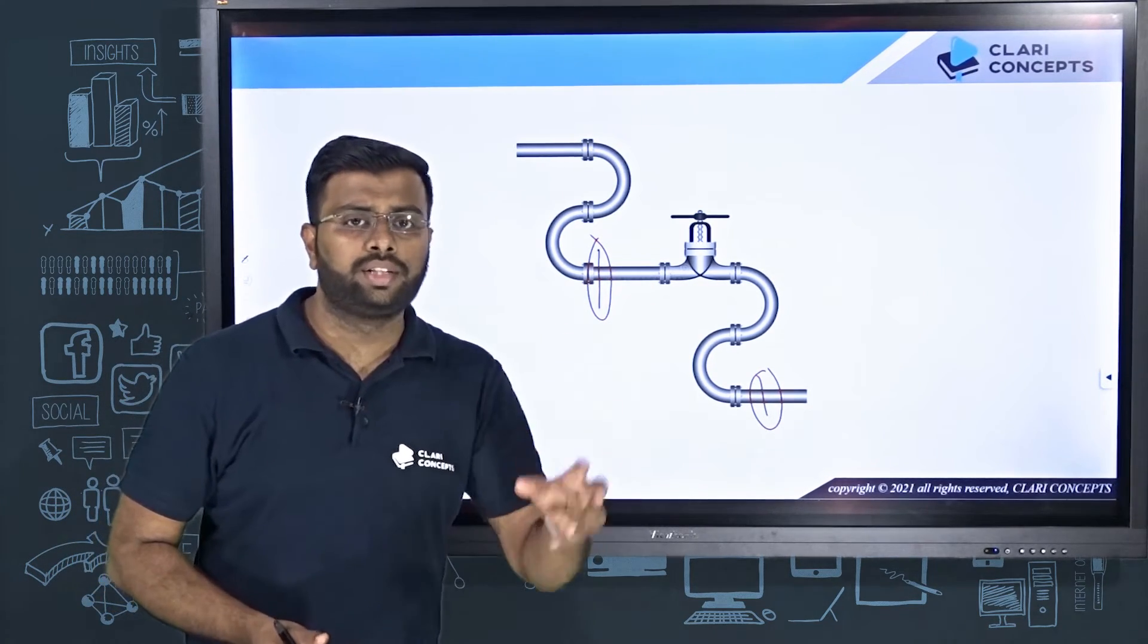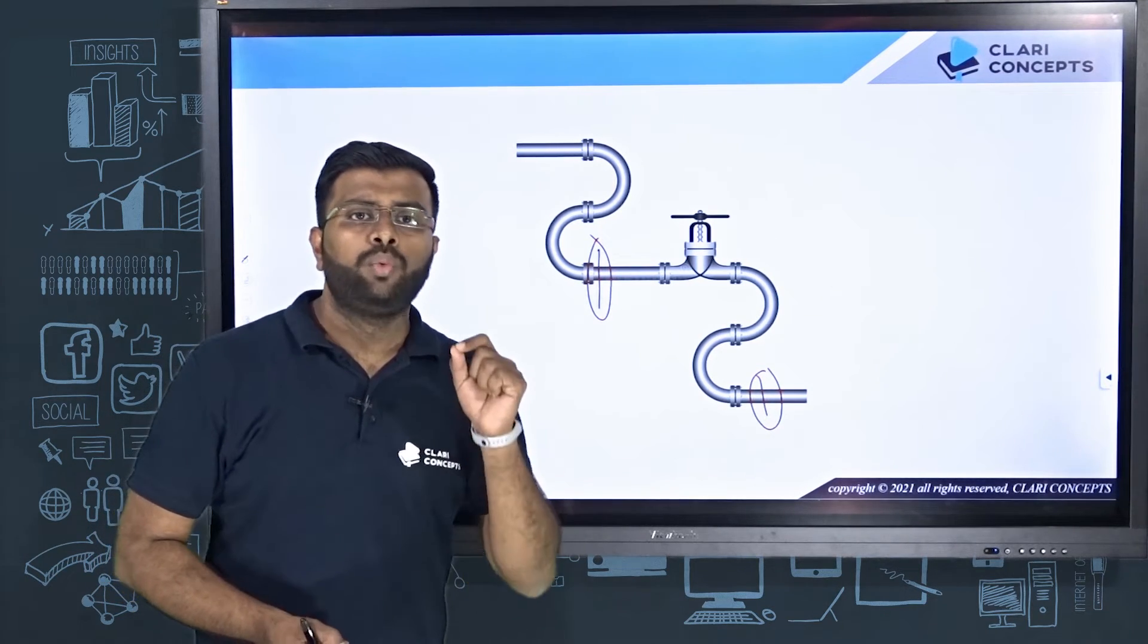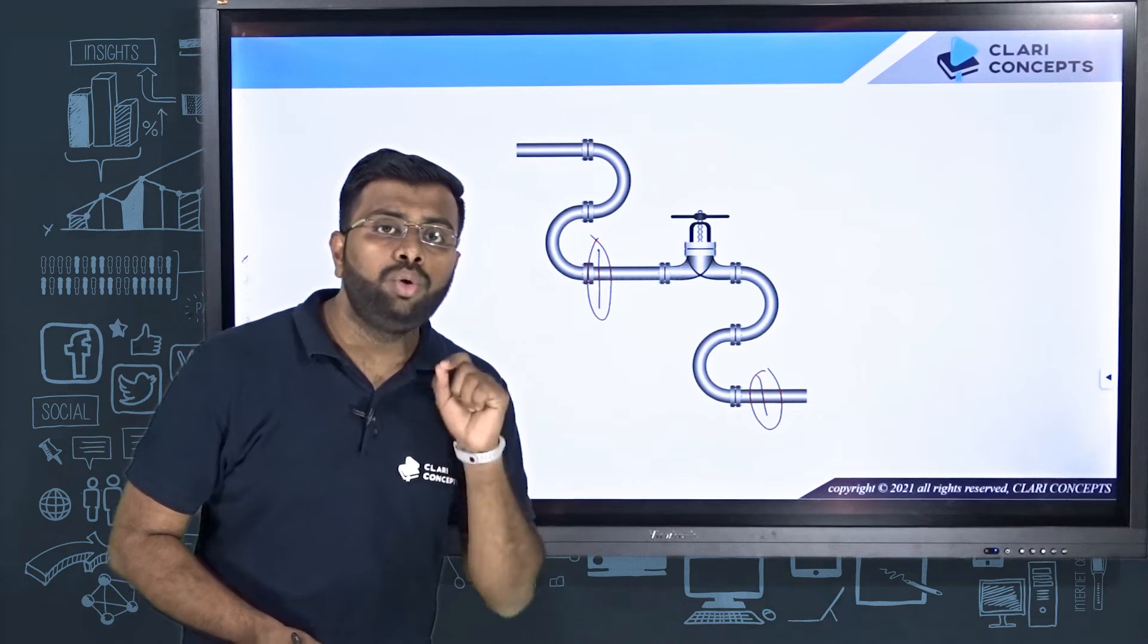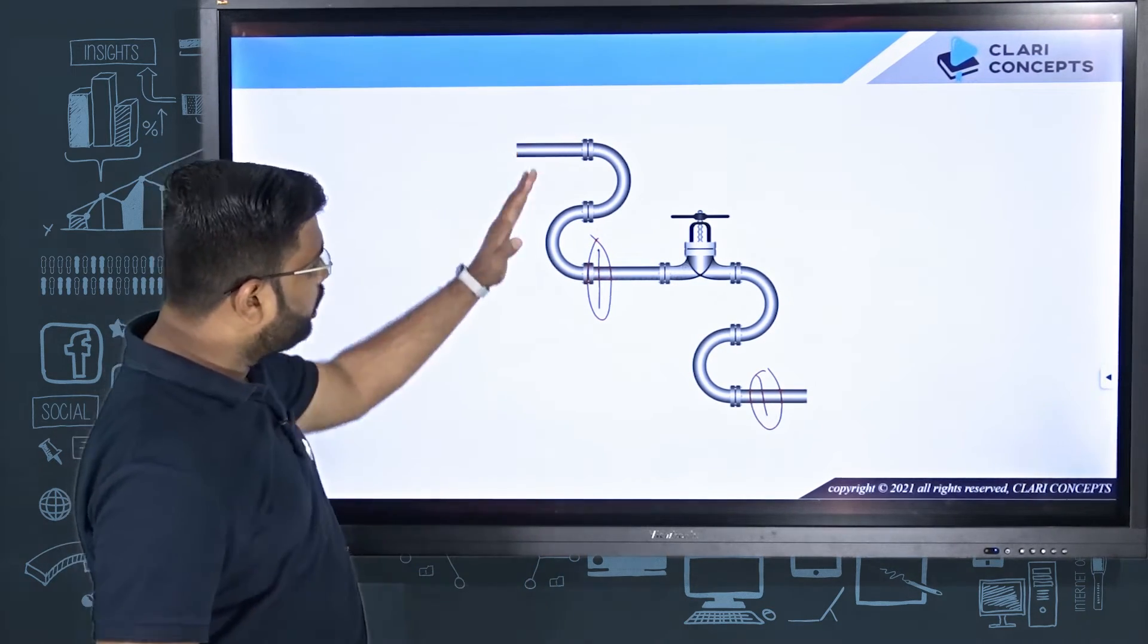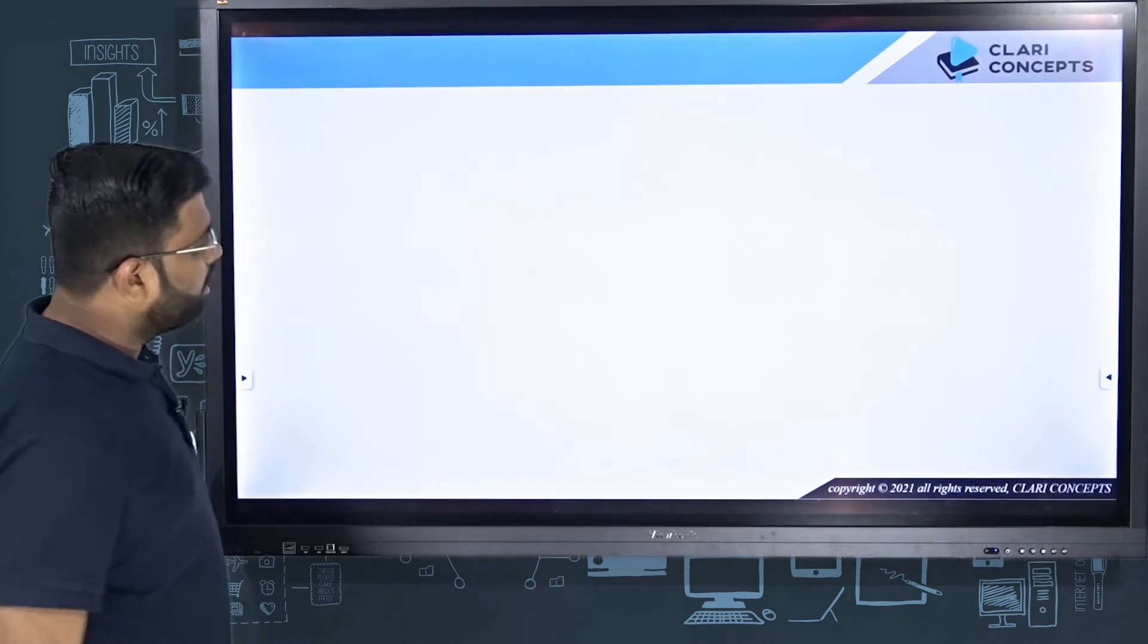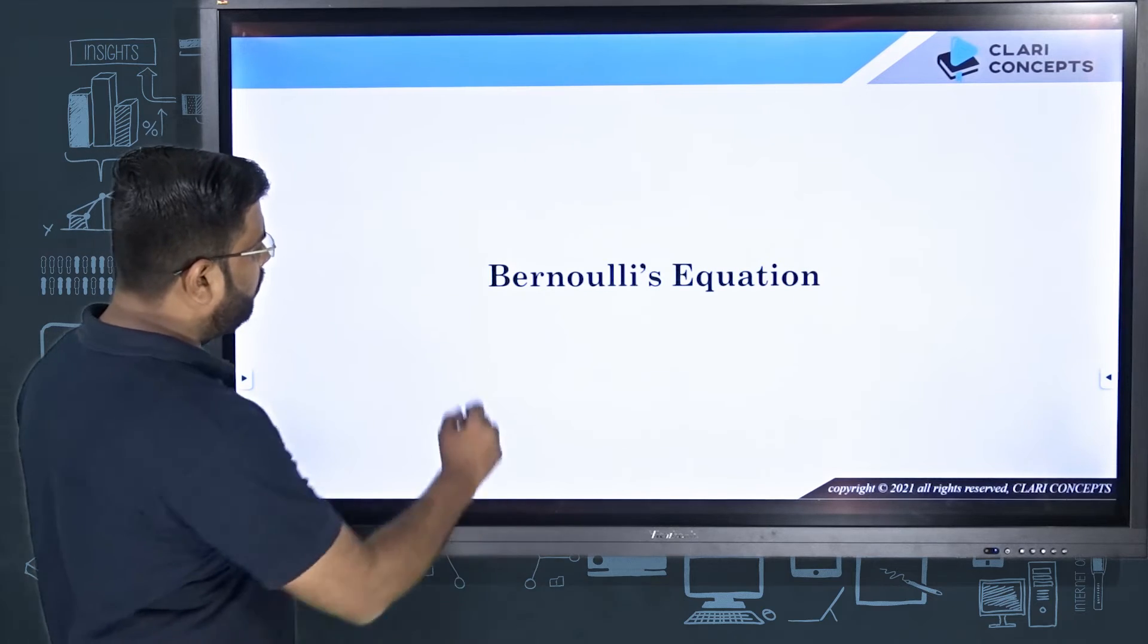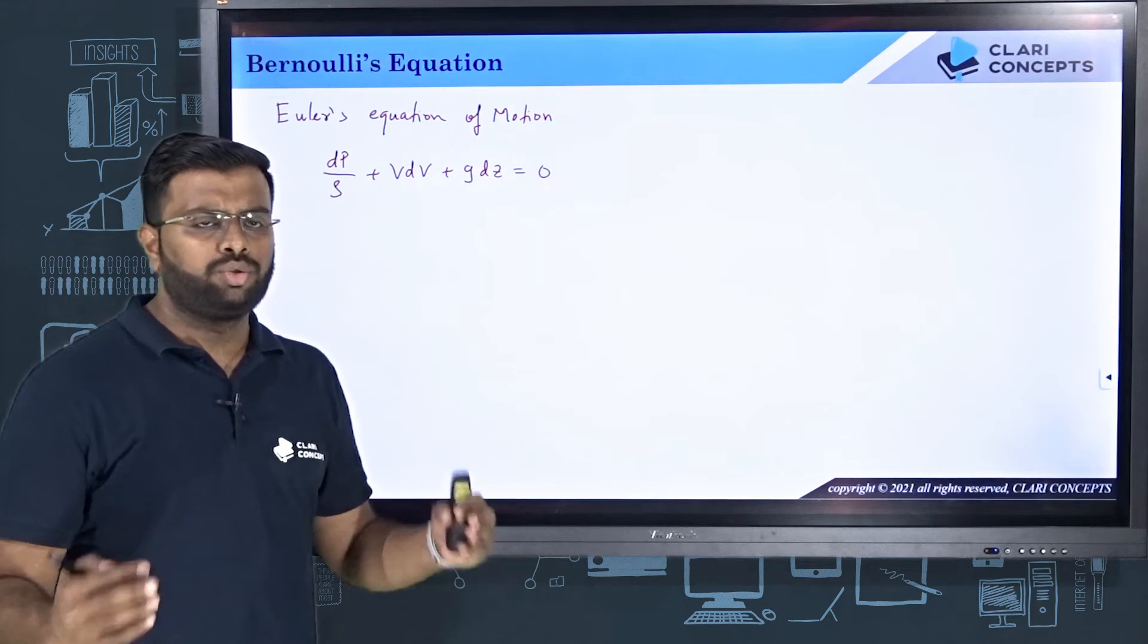So today in this lecture we are going to look at the theory which really helps you understand how you can assess, how you can estimate the energy contained by the fluid when it is flowing through a pipe at any section. That answer can be provided by the equation called Bernoulli's equation. So let us see Bernoulli's equation, what is it and what are the terms associated with this equation.